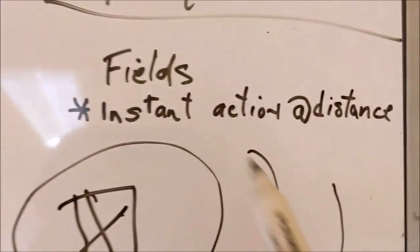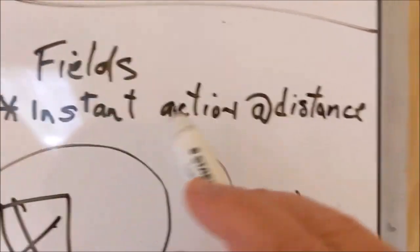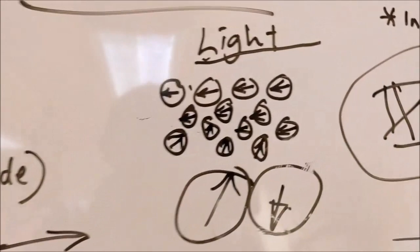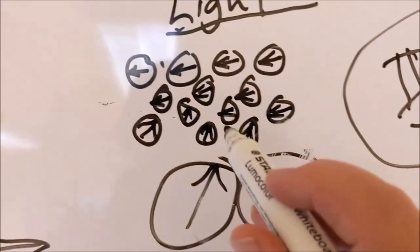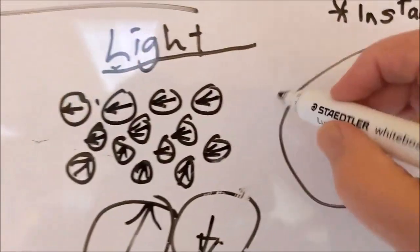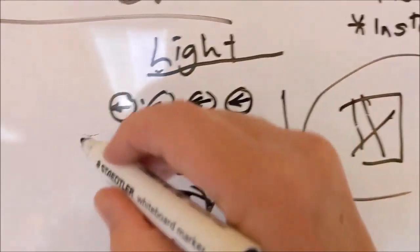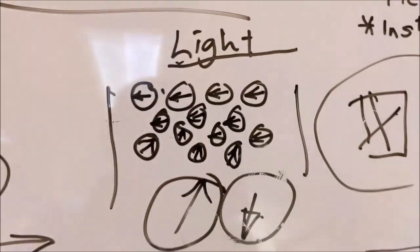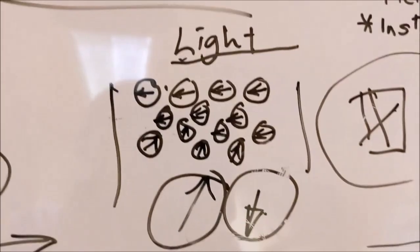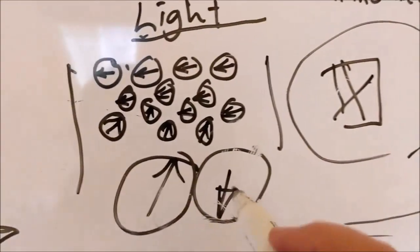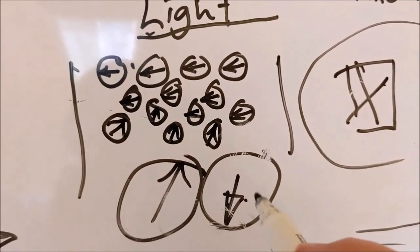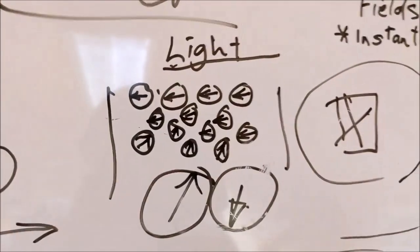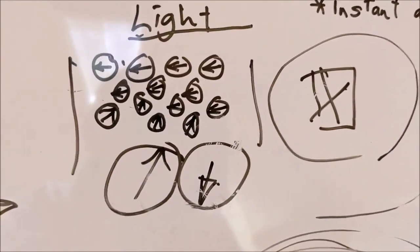But what it does do, it explains instant action at a distance. One move, the other moves. So this distance from there to there can be a millimeter, it can be a million miles, a trillion miles. But anything moves here, it moves there instantly.